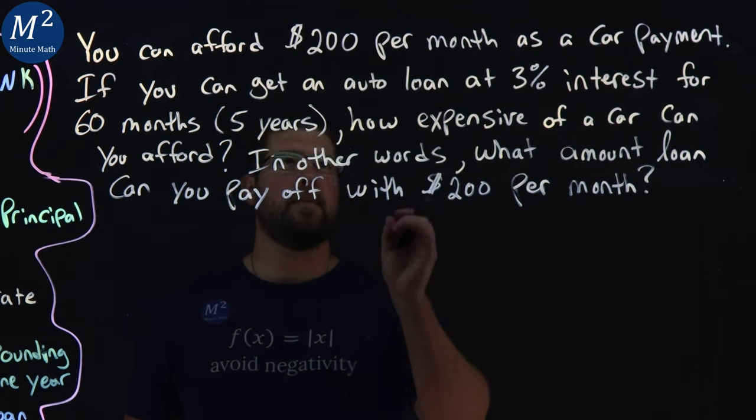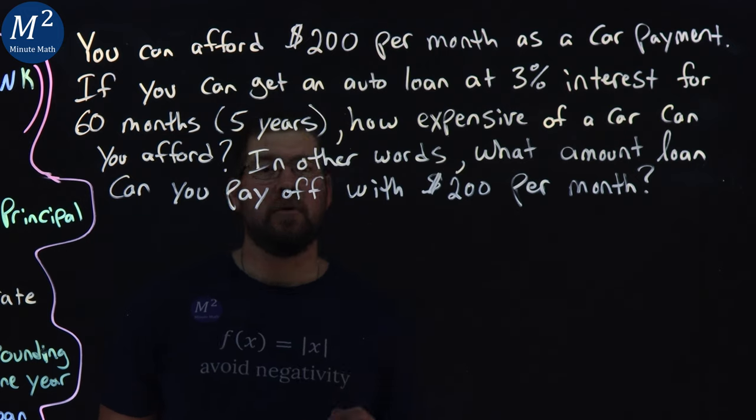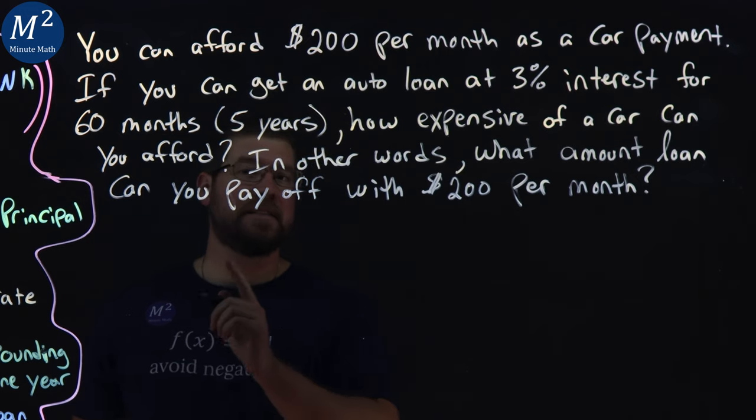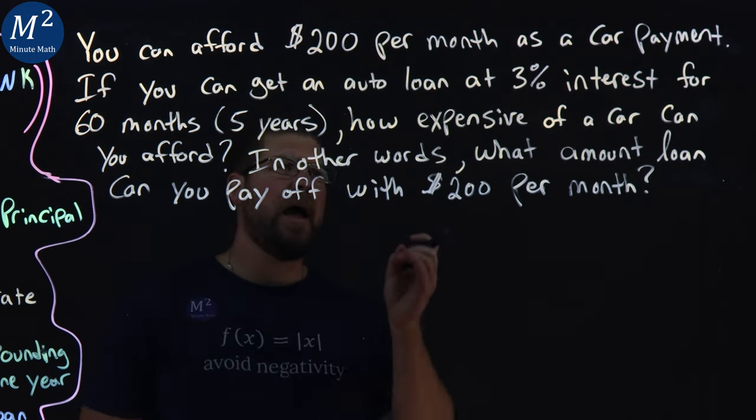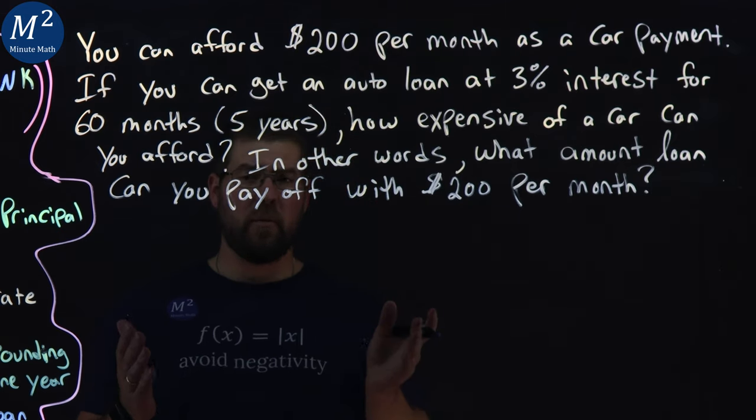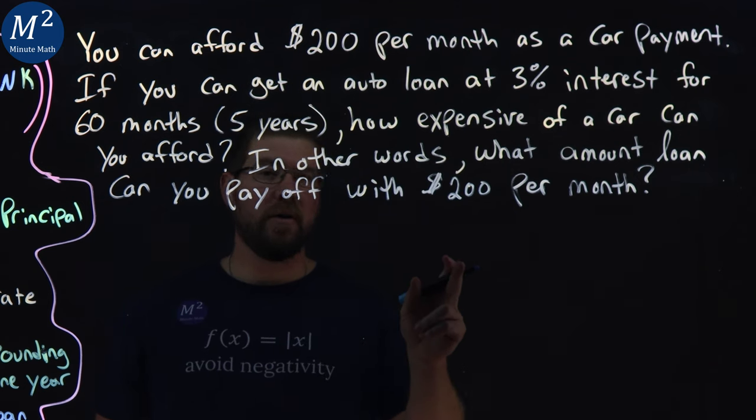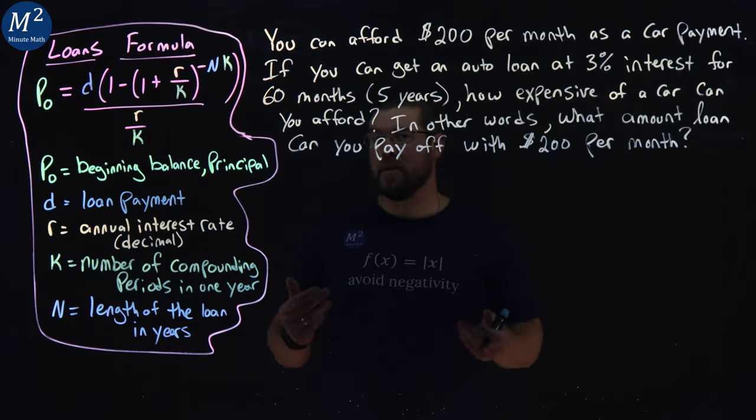You can afford $200 per month as a car payment. If you can get an auto loan at 3% interest for 60 months, which is 5 years, how expensive of a car can you afford? In other words, what amount loan can you pay off with $200 per month? Let's learn.